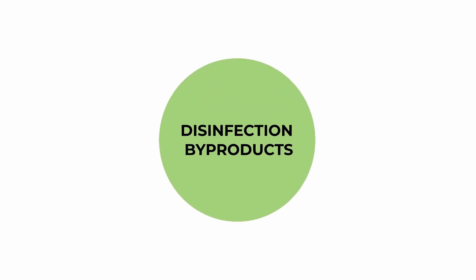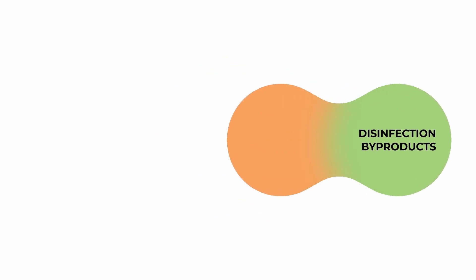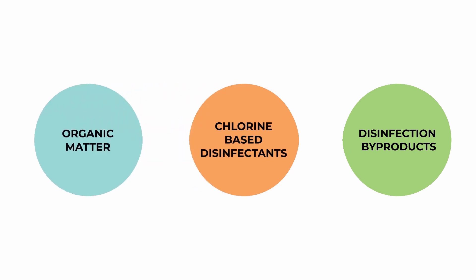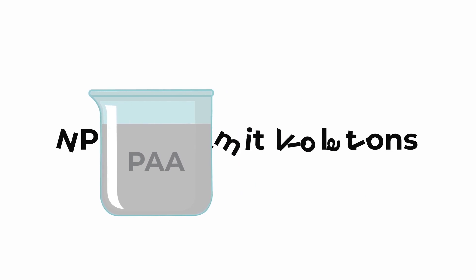Disinfection byproducts from the use of chlorinated chemicals are normally regulated by public drinking water systems. However, regulatory agencies are beginning to add them to NPDES permits to control or limit their discharge into source waters. While some systems may struggle to meet these new limits and avoid permit violations, disinfection with PAA could make these challenges a thing of the past.